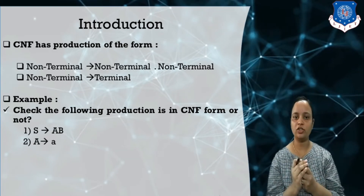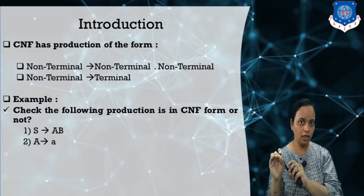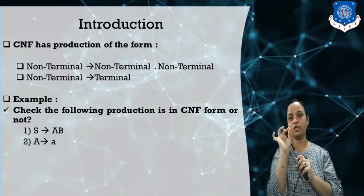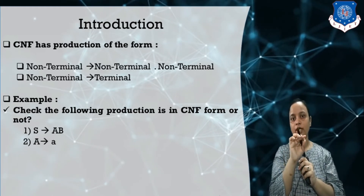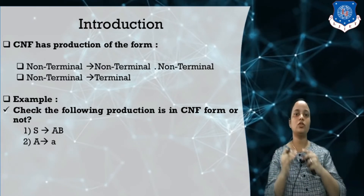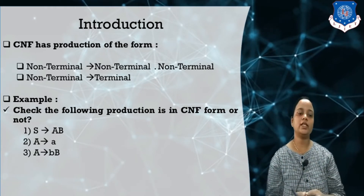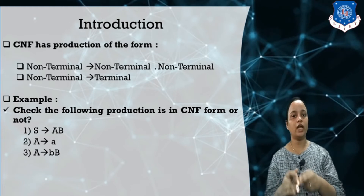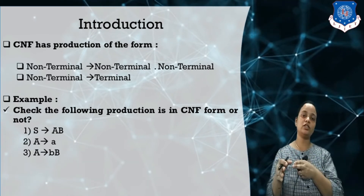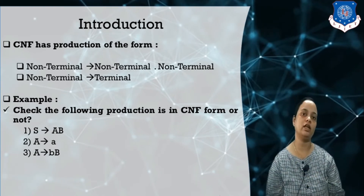Check the next production: A derives small a. Small a is a terminal — it is a single terminal, so the second form says a non-terminal derives a single terminal. Obviously this production is in CNF form. Next, A derives small a capital B. The right-hand side contains two things: terminal and non-terminal. This is not in CNF form.